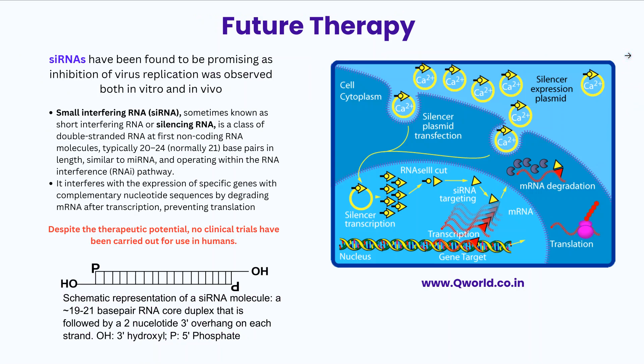Regarding future therapy, siRNA has shown very promising results for inhibition of virus replication both in vitro and in vivo. siRNA — small interfering RNA, also known as silencing RNA — is a double-stranded non-coding RNA molecule of usually 20 to 24 base pairs. Similar to miRNA, it interferes with expression of specific genes by degrading mRNA after transcription and preventing translation. Despite its tremendous therapeutic potential, no clinical trials have been carried out for use in humans.